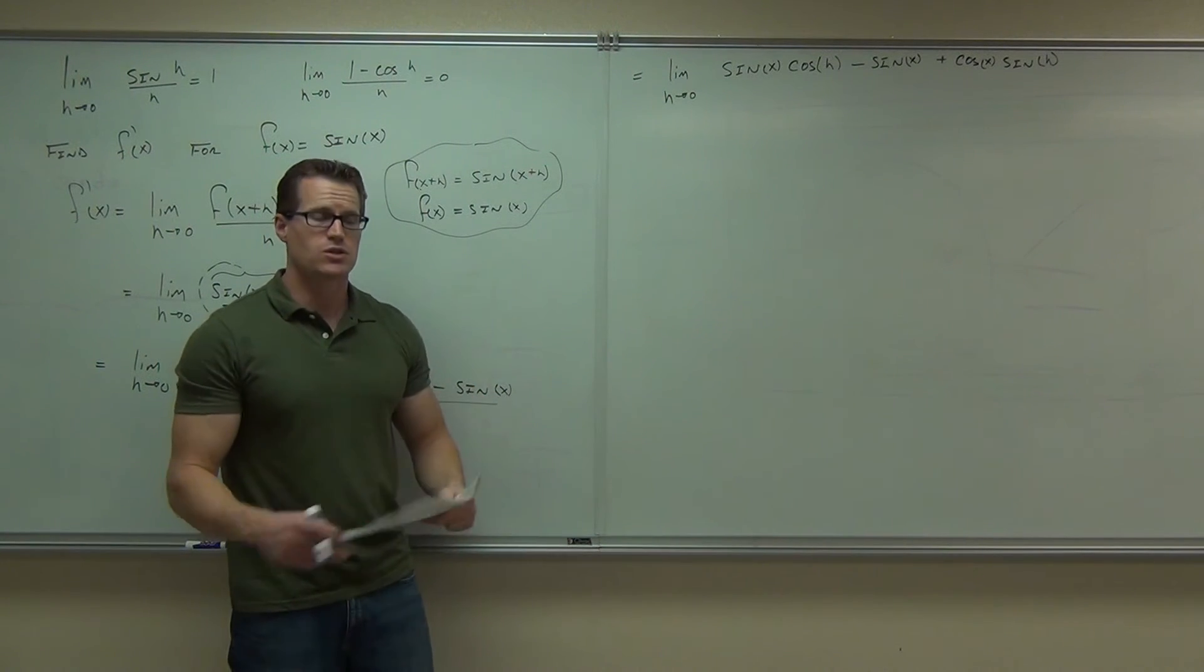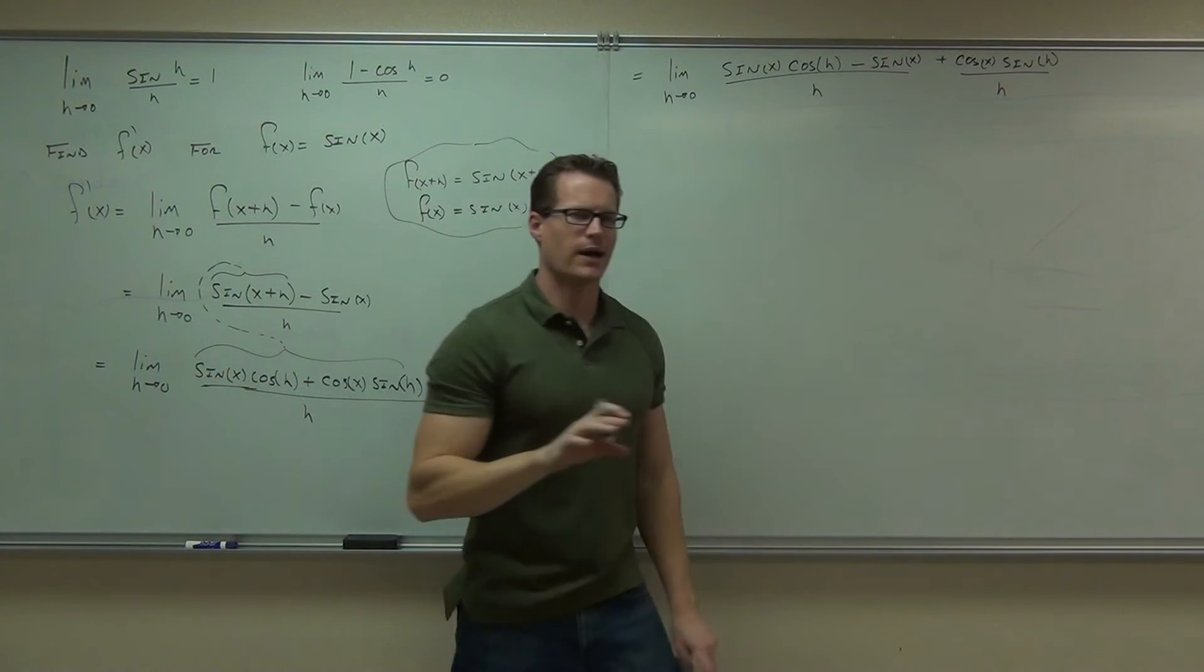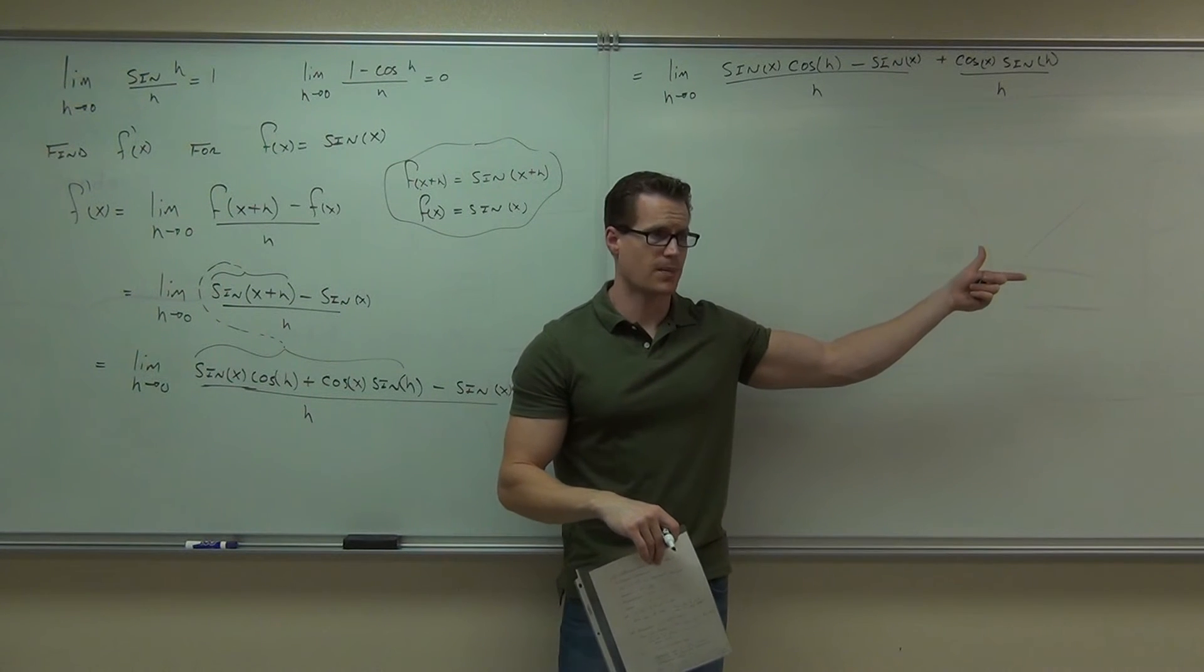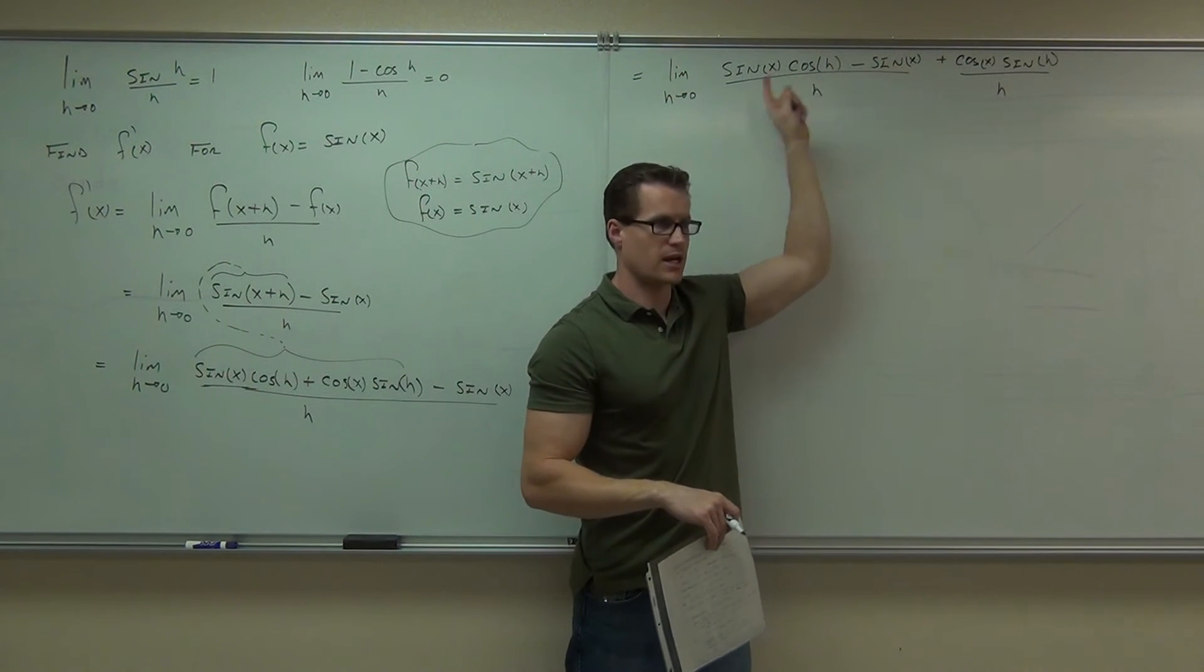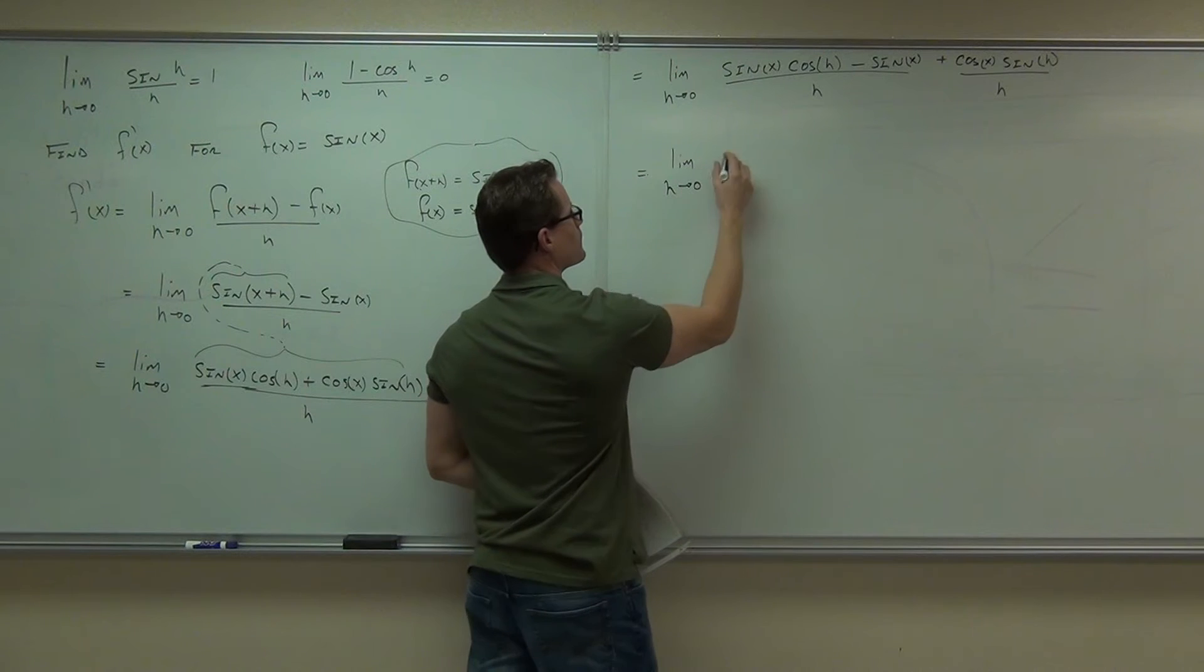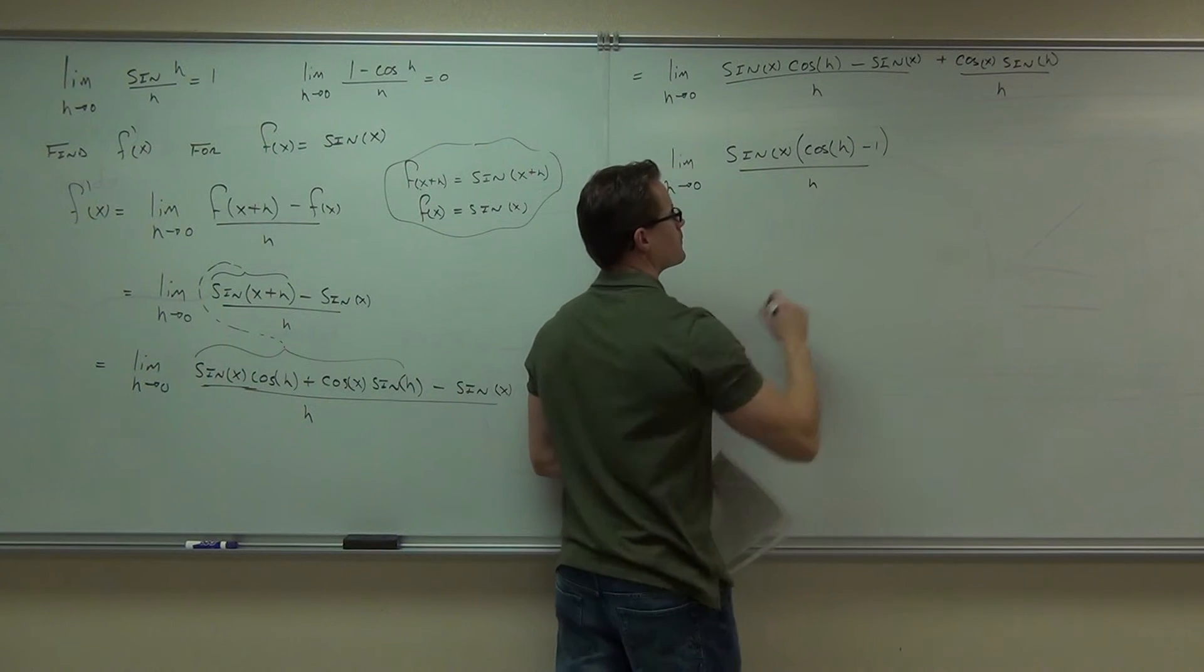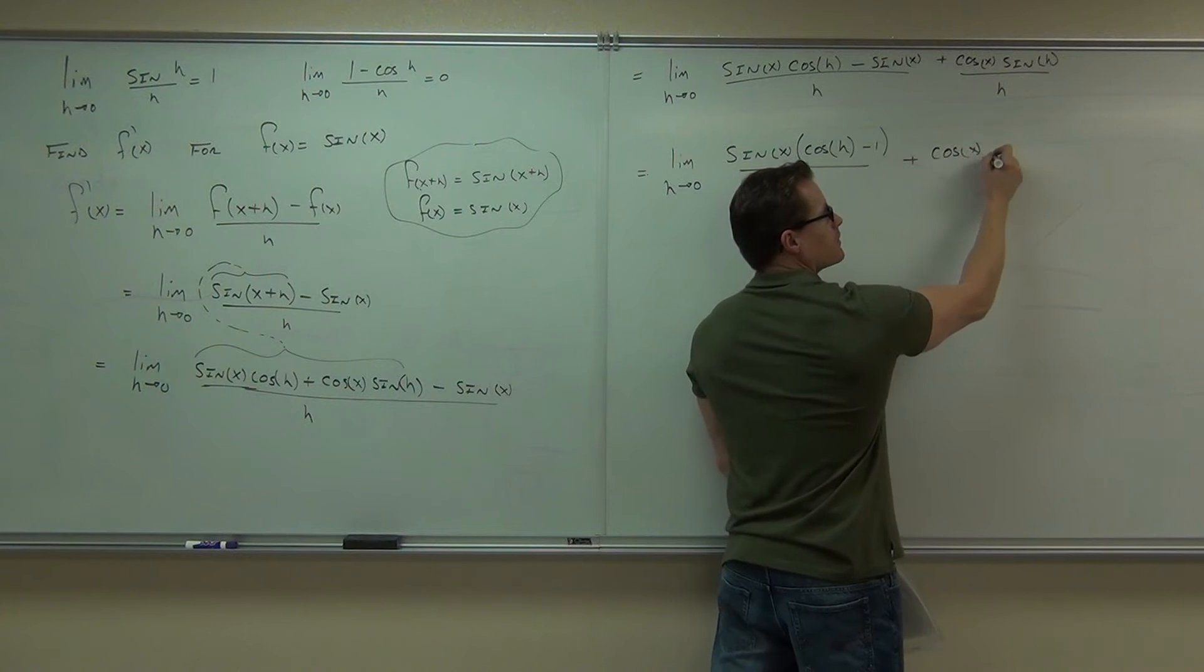Now, notice that this whole thing is over h, right? Which means I can separate each of those top parts as over h if I really wanted to. True? Make three different fractions. What I'm going to choose to do is a unique thing. I'm going to make two fractions. I'm going to make this one over h plus this one over h. And you might see why already. Do you see why already? Do you see a sine h over h right now? Anywhere? On the right-hand side, there's a sine h over h. We're going to be able to use that. On the left-hand side, we see a sine x and a sine x. We're going to be able to factor that out. So we're going to factor the sine x out here.